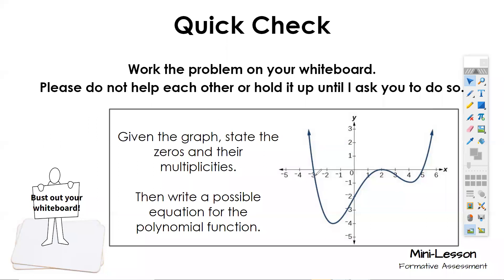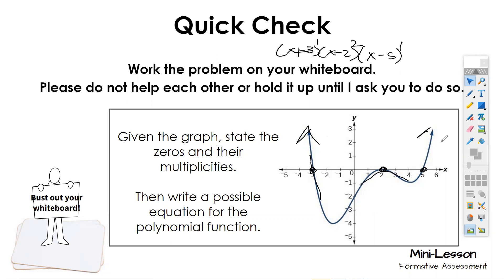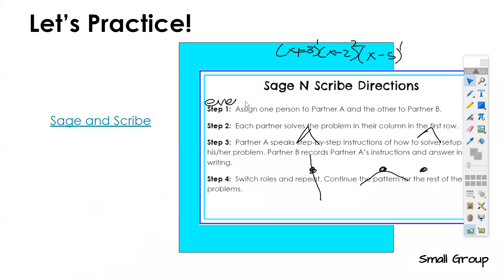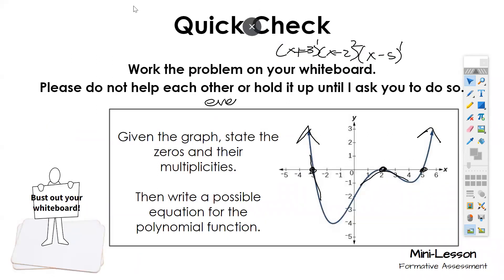The zeros are going to be negative three, two, and five. I'm going to switch the sign of each and put an x in front — so this gives me x plus three, x minus two, and x minus five. It crosses at negative three — that's an exponent of one. It bounces at two — that's an exponent of two. It crosses at x equals five — exponent of one. Both ends are facing up, so I know it's even and positive. So y equals x plus three times x minus two squared times x minus five.